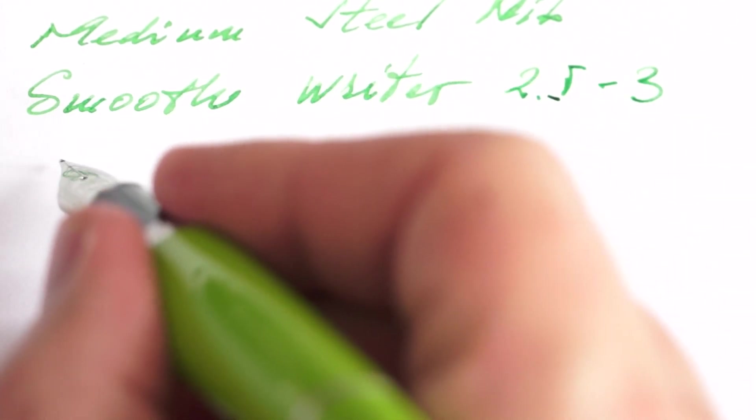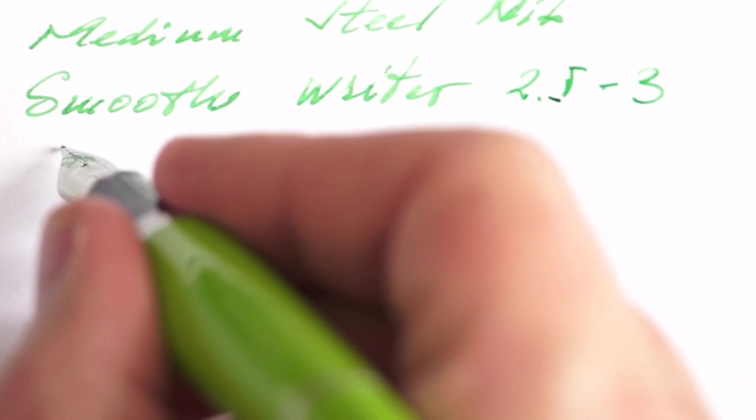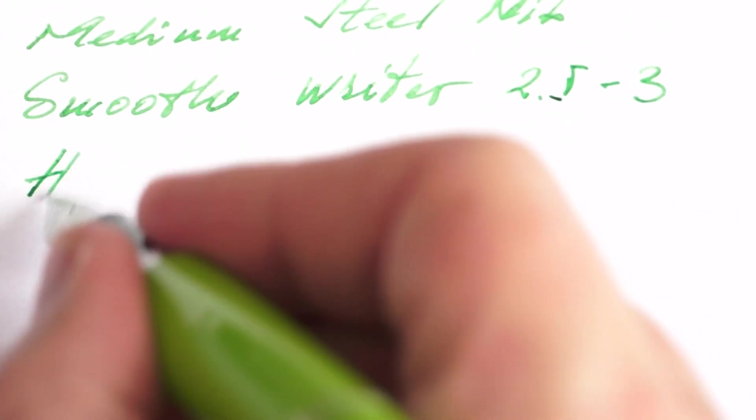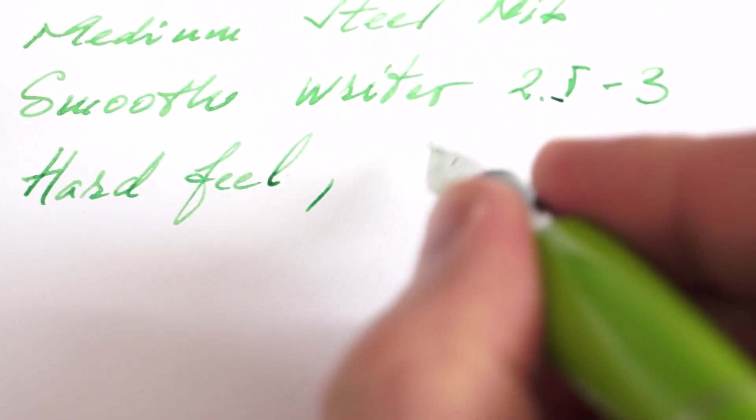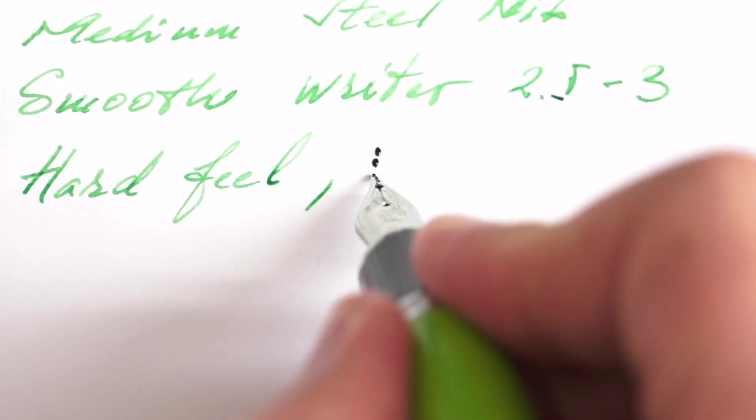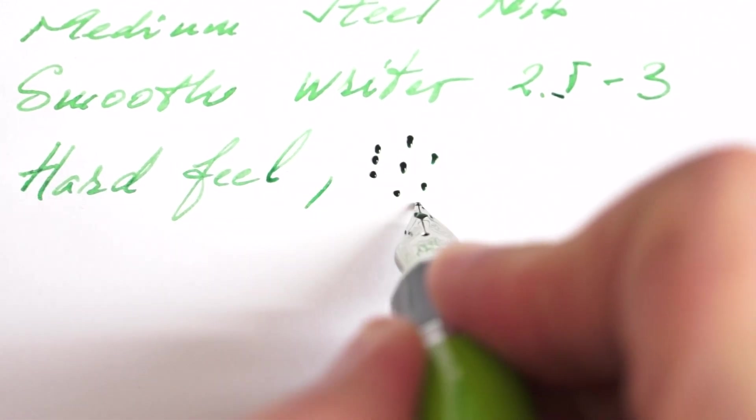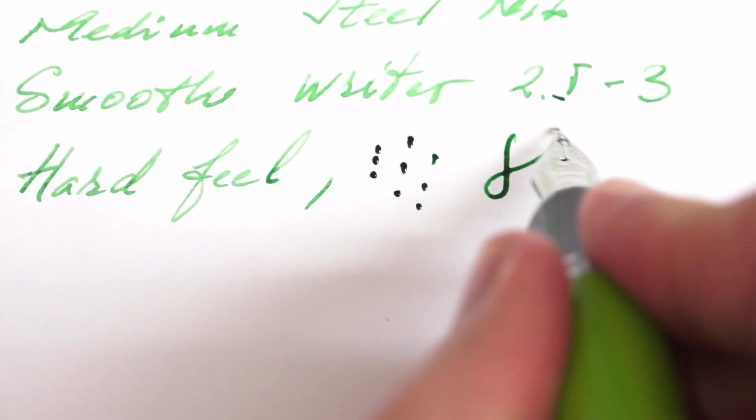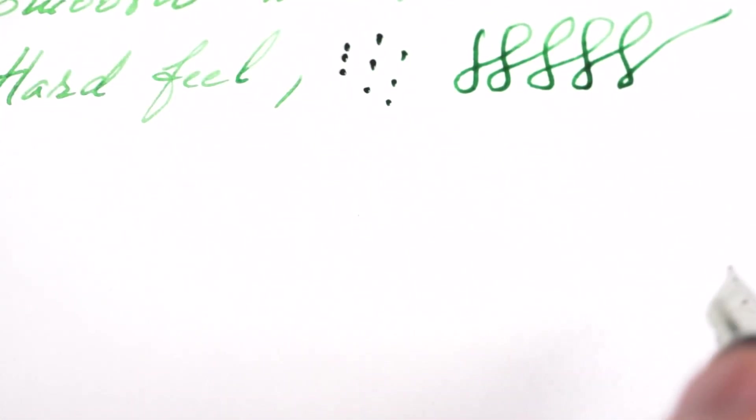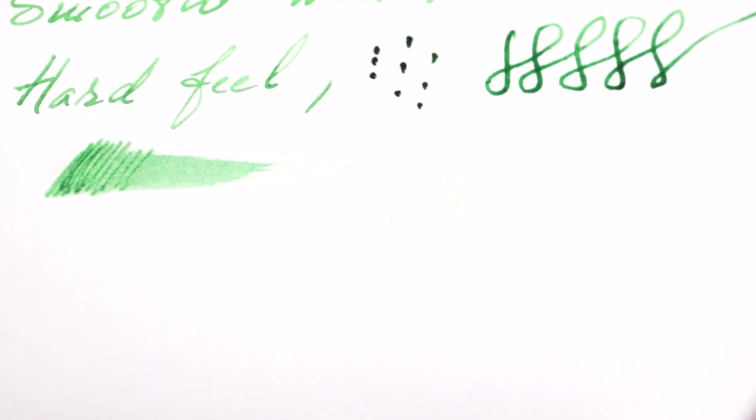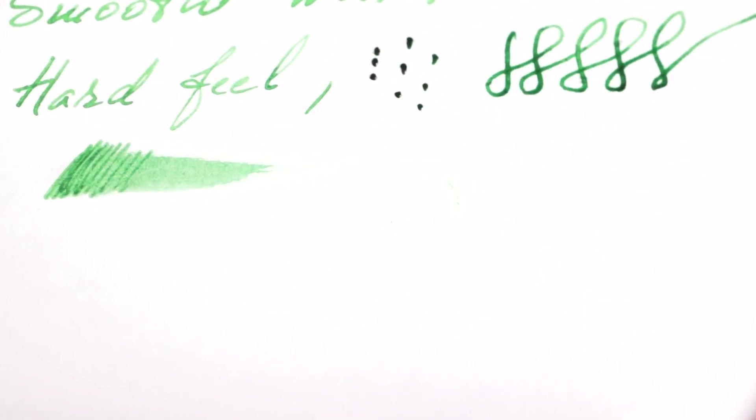The nib has a hard feel, doesn't give any impression of flexing. This pen cannot be flexed at all. There's no give to this nib, it's very hard. From wetness point of view I would say it's medium wet. I'm also not sure what the properties of this ink are.